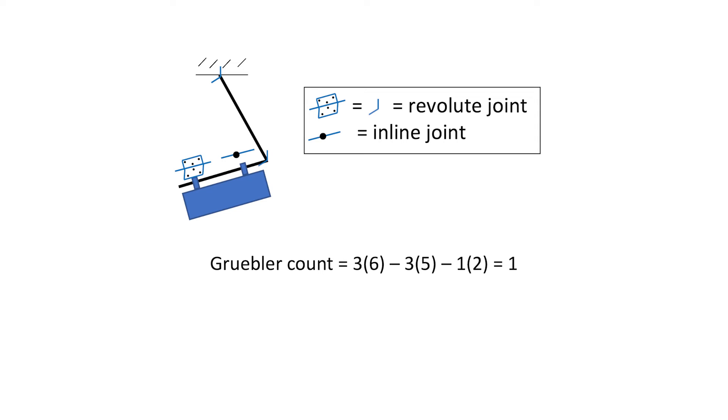Consider now a double pendulum with a plate that can swing about the bottom pendulum link. Let's perform the Gruebler count for this mechanism. We see that the count is one. This would suggest that the mechanism has one degree of freedom, but this is not true.